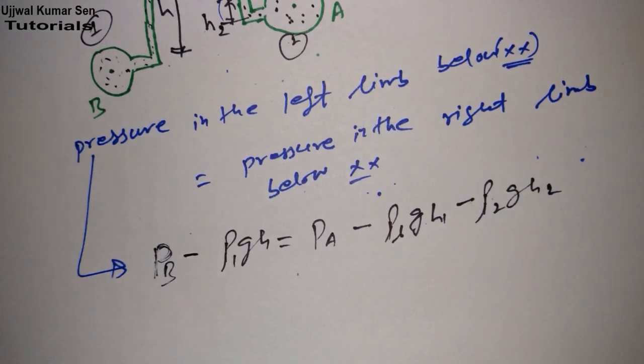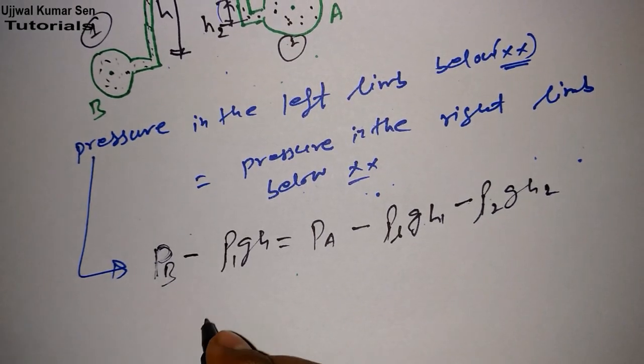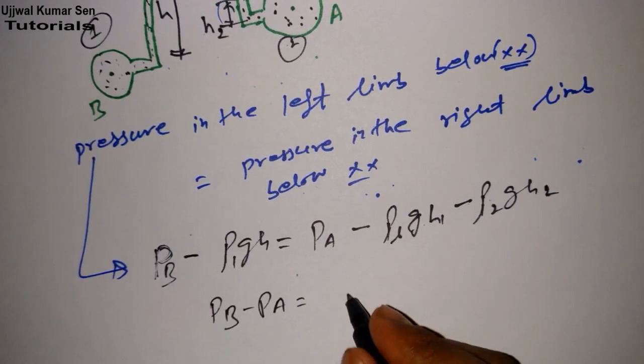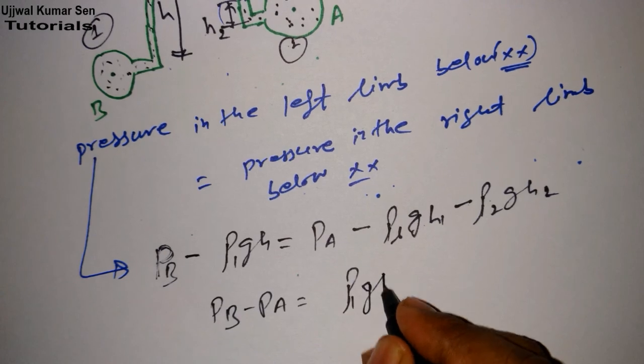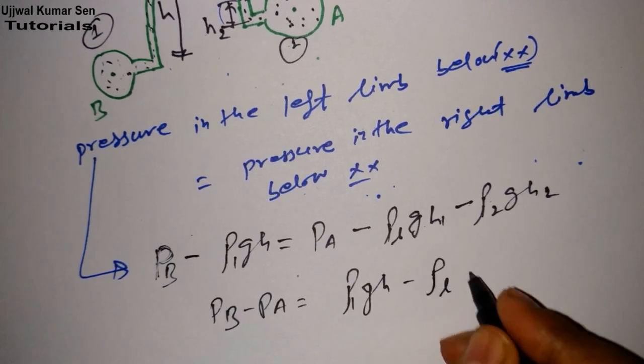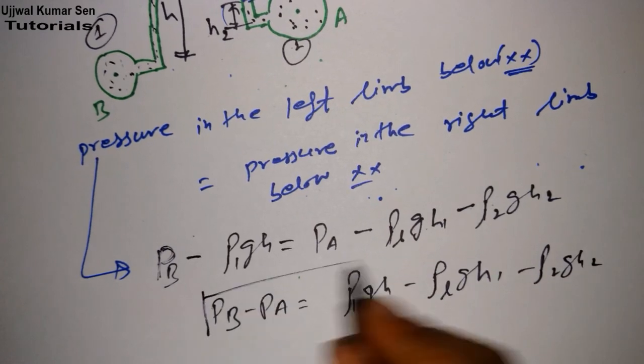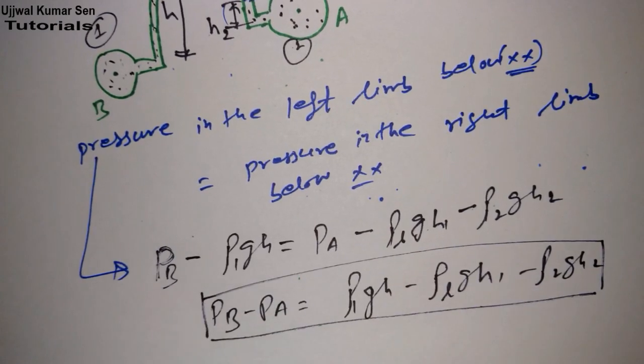We have to rearrange the equation then we'll get the final answer. P_B minus P_A is equal to rho_1 g H minus rho_L g H_1 minus rho_2 g H_2. So this is the final equation we got in case of inverted U-tube differential manometer.